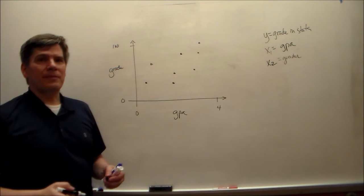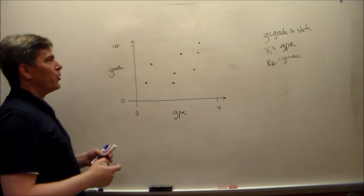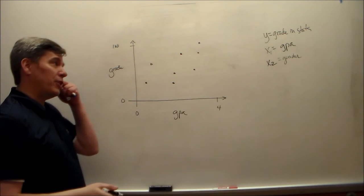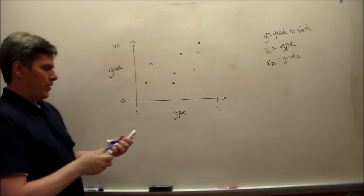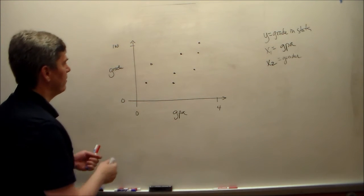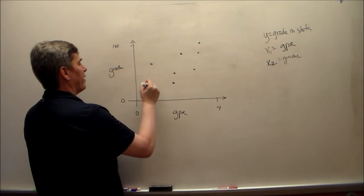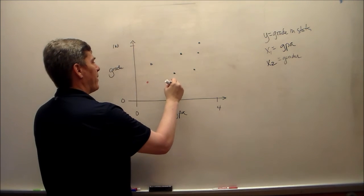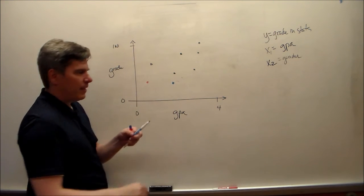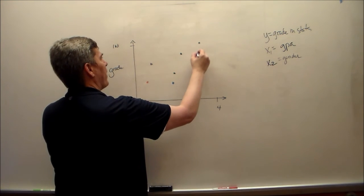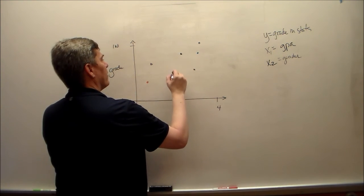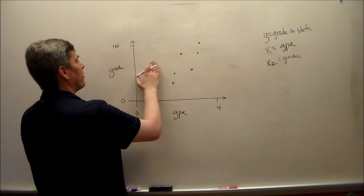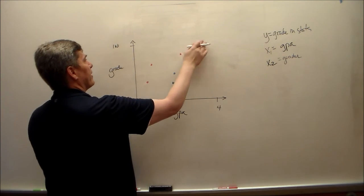But wait, we got gender. Each of those dots refers to a student. The student not only has a GPA and a grade in stats, but also has a gender. So, I've got blue and red. This was a female. I need one more hand. I'll make this a male, and this a male, and this a male, and get rid of all the blues. And then this is a female, and this is a female, and this is a female.